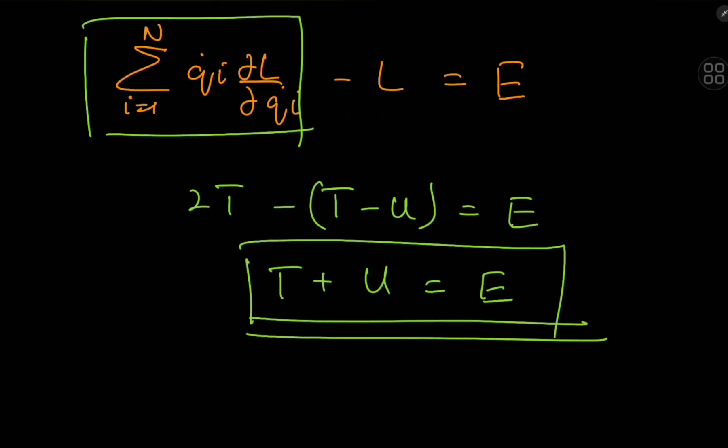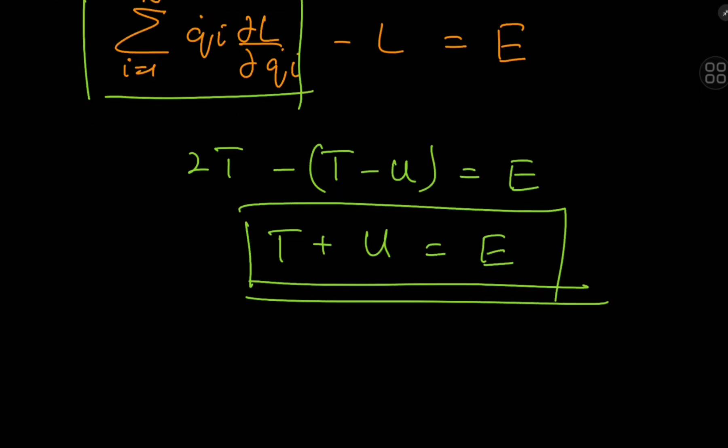What we just witnessed was beautiful. We started from something extremely fundamental — the homogeneous nature of time — and that led to a conservation theorem in energy, one of the most important tools in physics. This whole exercise was an example of Noether's theorem, which states that conservation theorems in physics all arise from symmetries. In this case, a symmetry in time led to a conservation principle in energy. In the next video we'll talk about spatial symmetries that give rise to conservation of momentum.